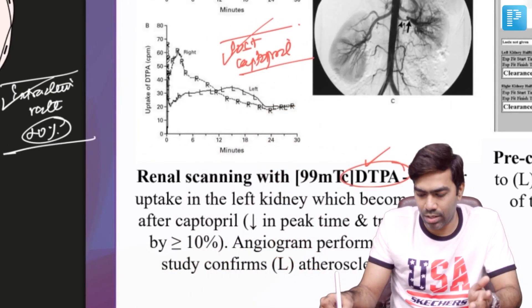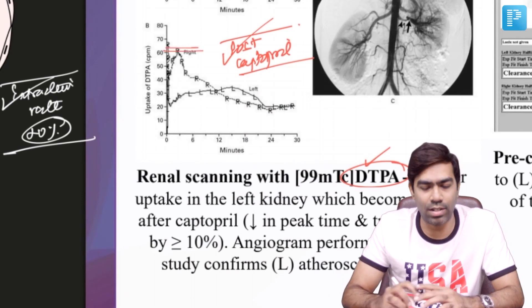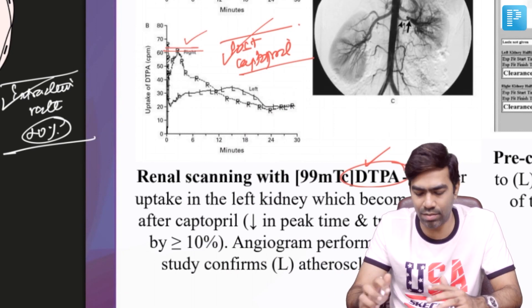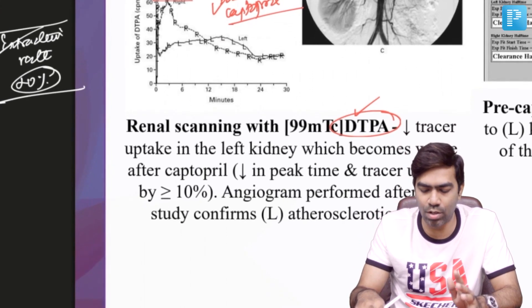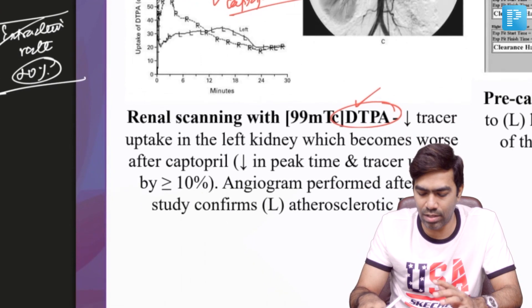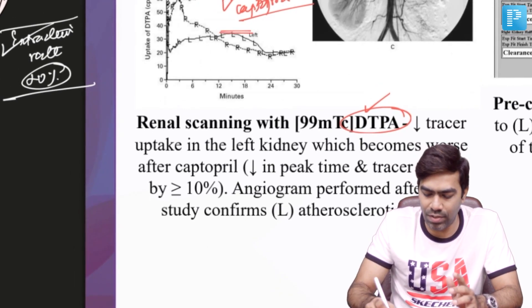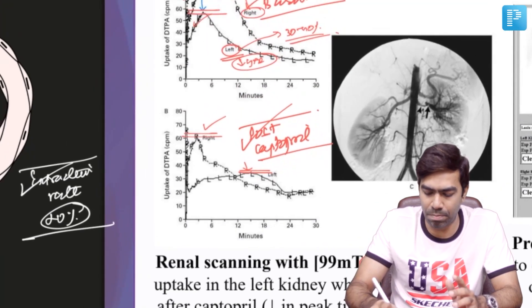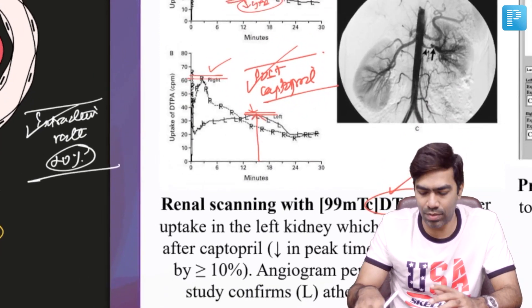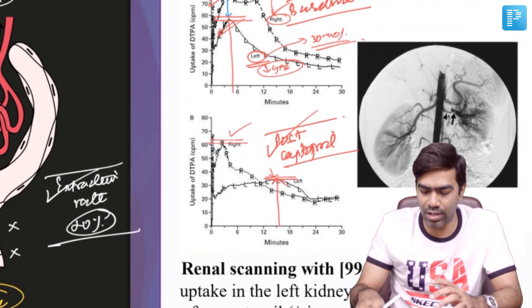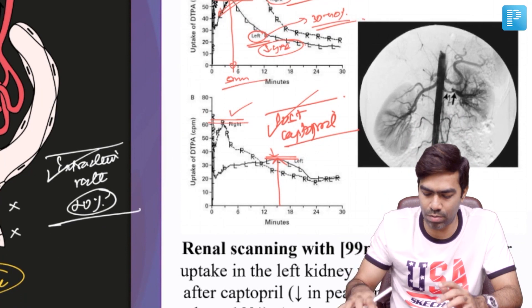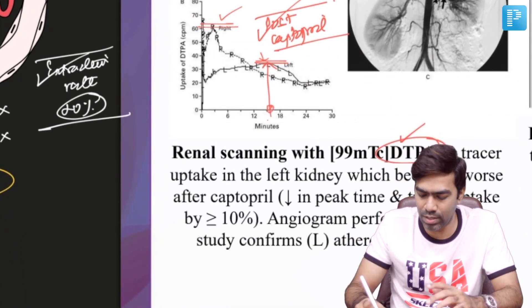After giving captopril, the difference is augmented. In the stenotic kidney, captopril — an ACE inhibitor — causes the GFR to fall dramatically, while in the normal non-stenotic kidney, the GFR remains normal or may even increase. In the post-captopril images, the right kidney's tracer uptake remains adequate, while the left kidney shows significant blunting of the peak and a significant delay — the peak for the left kidney shifts from approximately 5 minutes pre-captopril to approximately 15–16 minutes post-captopril.